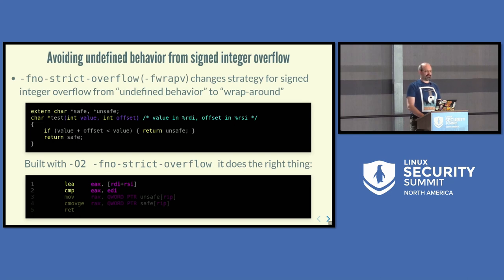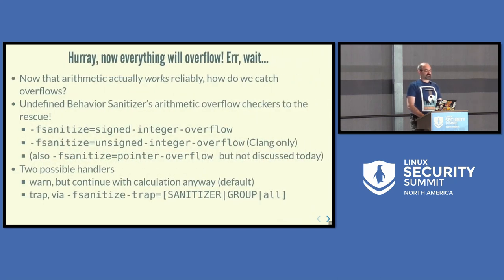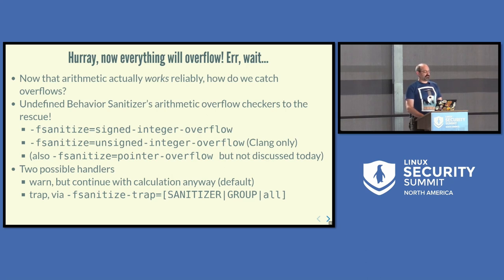Getting rid of undefined behavior was pretty important, because more than a security issue, it just causes crazy things to happen. Now everything will overflow — not exactly what we wanted, but at least arithmetic works in a reliable fashion. The good news is that for catching arithmetic overflow we have sanitizers available in GCC and Clang: -fsanitize=signed-integer-overflow is the main one, and Clang also has -fsanitize=unsigned-integer-overflow, plus a pointer overflow checker.